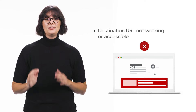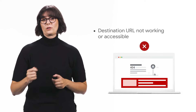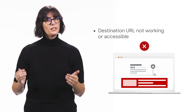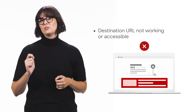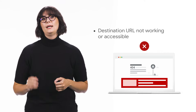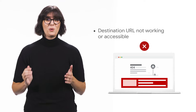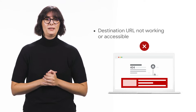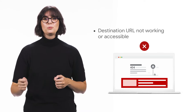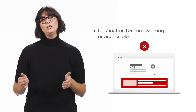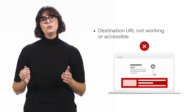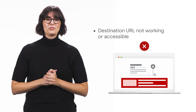One of the most common violations we see is when the destination URL is not working or accessible. It can be frustrating for a user when they click on an ad looking for a specific product and they are directed to a page that does not work properly. Sometimes sites are simply broken or have errors that need to be worked out, so make sure your destination URL is actively welcoming users.